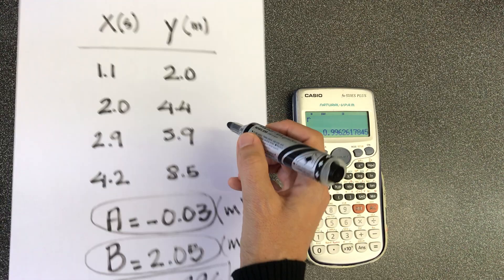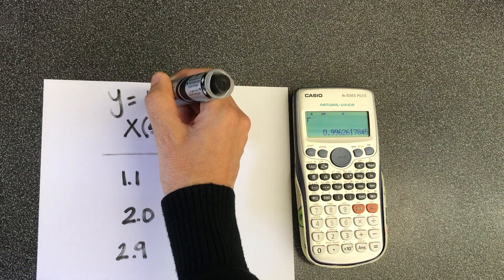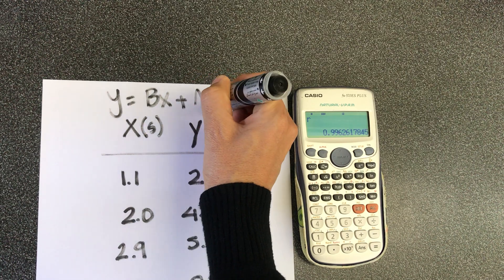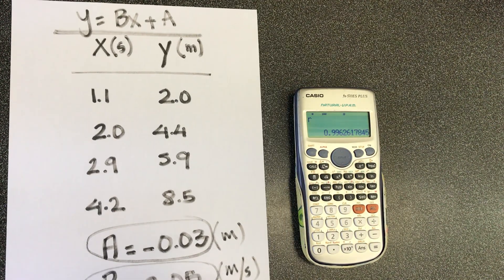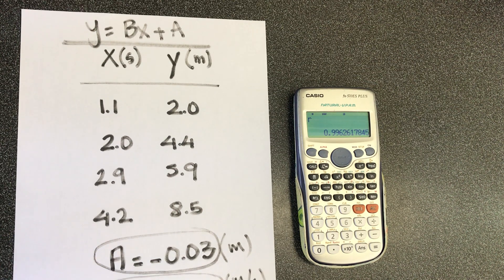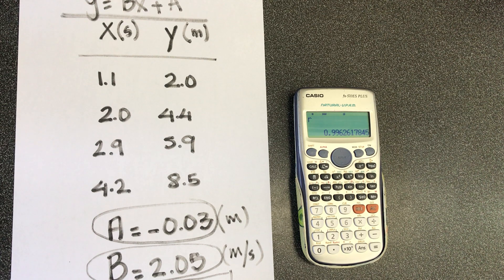So, if you write the equation of a straight line to be y is equal to bx plus a, you're going to see it as a straight line that would be passing by a point very close to the origin. And this is the slope, and this is how we do the work on our scientific calculator.